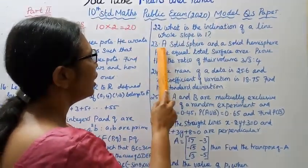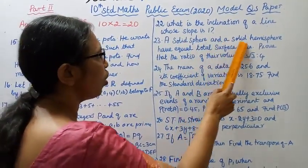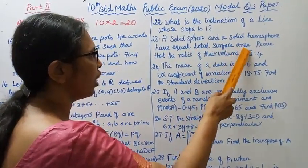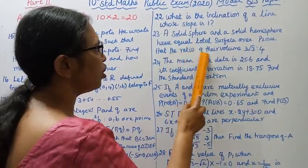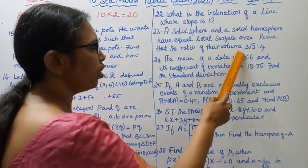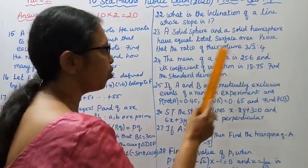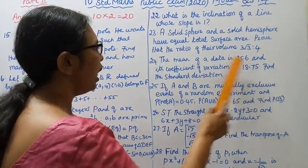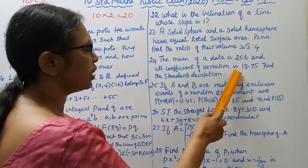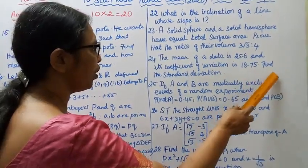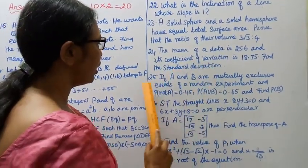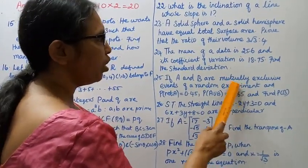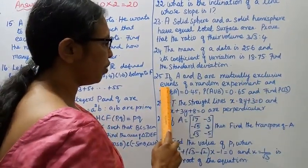Question 23: A solid sphere and a solid hemisphere have equal total surface area. Prove that the ratio of their volumes is 3√3:4. Question 24: The mean of a data is 25.6 and its coefficient of variation is 18.75. Find the standard deviation.